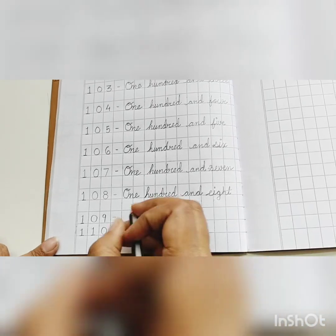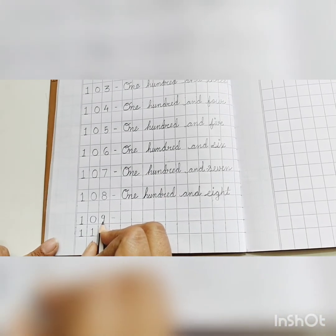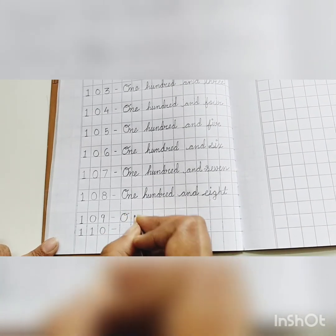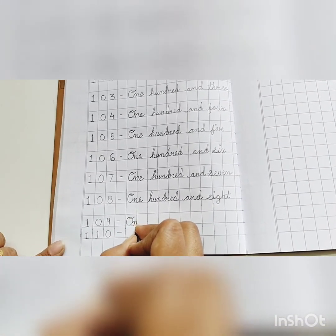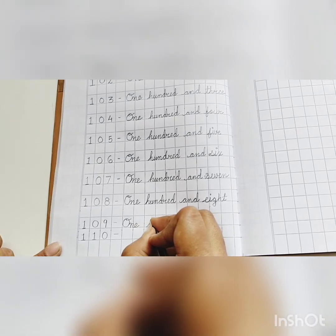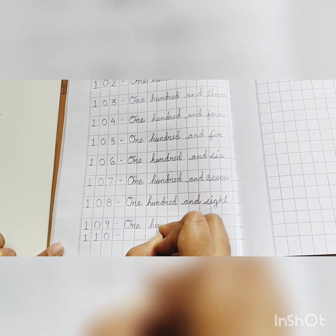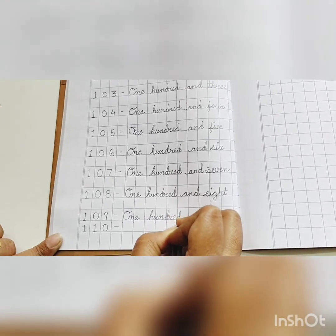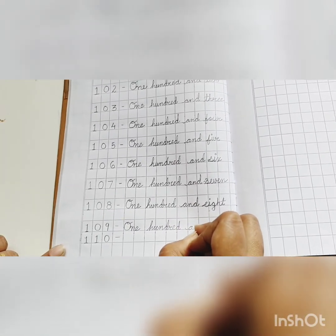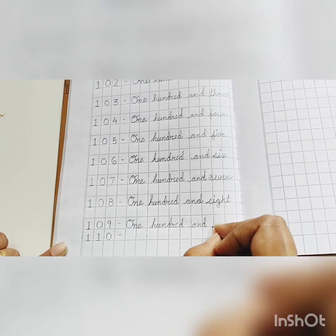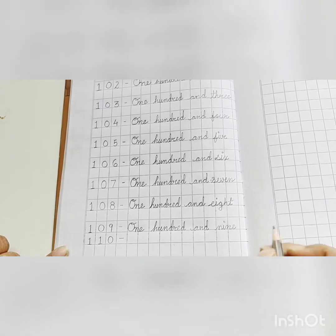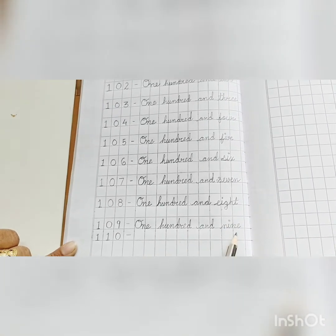Next, 109. O-N-E, 1, H-U-N-D-R-E-D, 100, A-N-D and N-I-N-E, 9, 109.